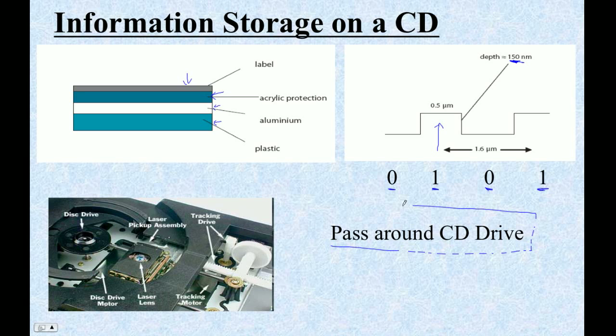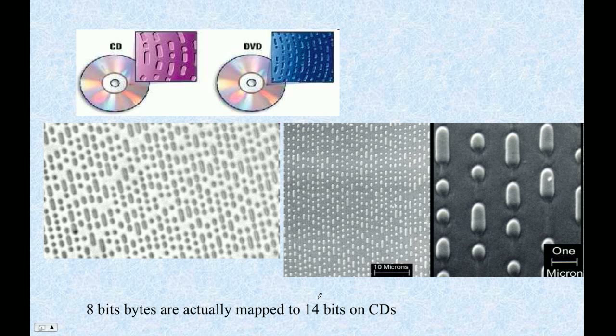I'm going to pass around a CD drive when you guys get to class. And you can look at it. Careful, the edges are a little bit sharp. But this is the thing that grabs the disc. The disc spins at like 7,200 RPM or some crazy thing. And then this is the laser that shines up in there. And this is a little motor that can move that so that it can read the tracks on the CD.